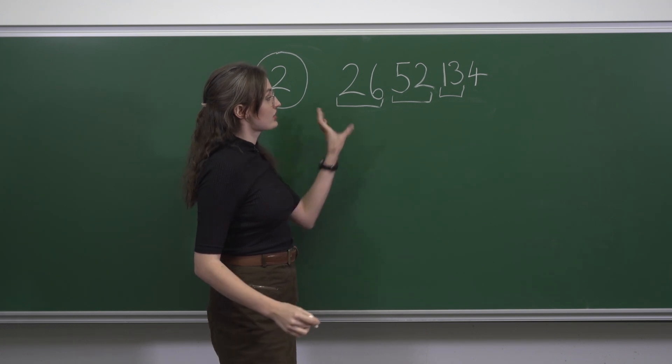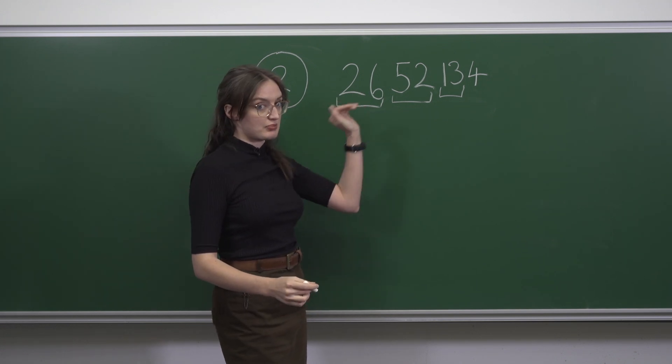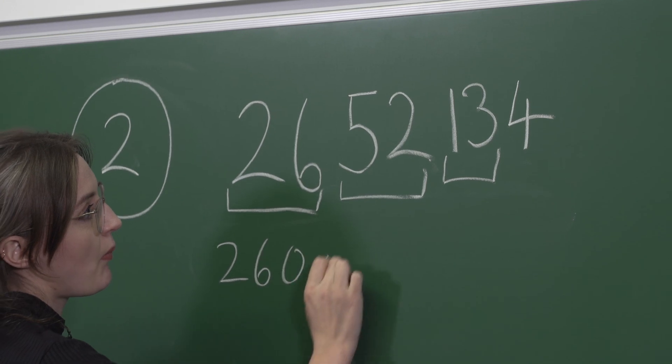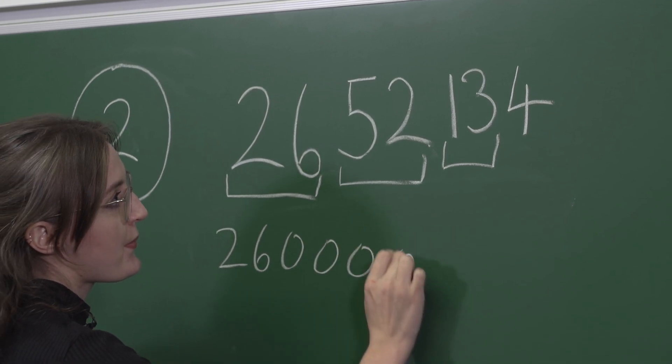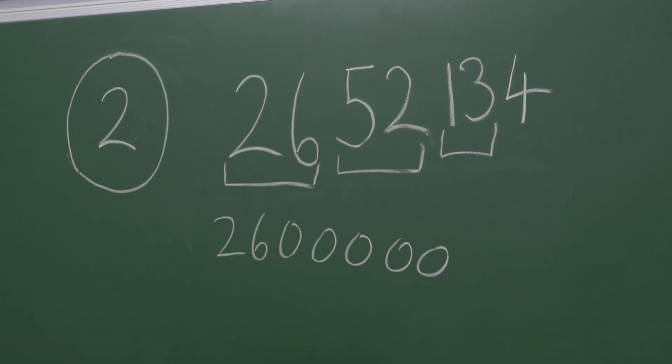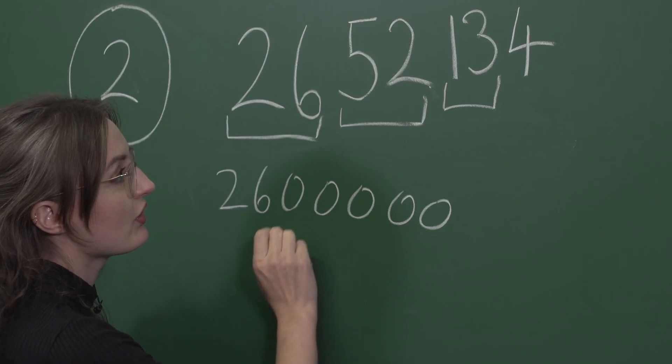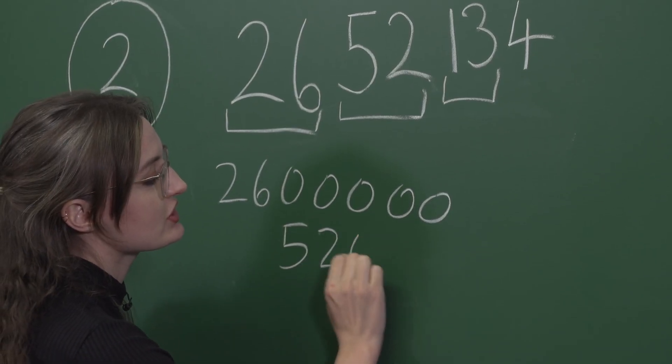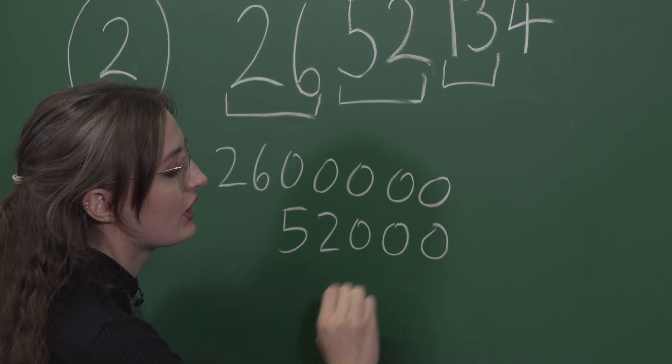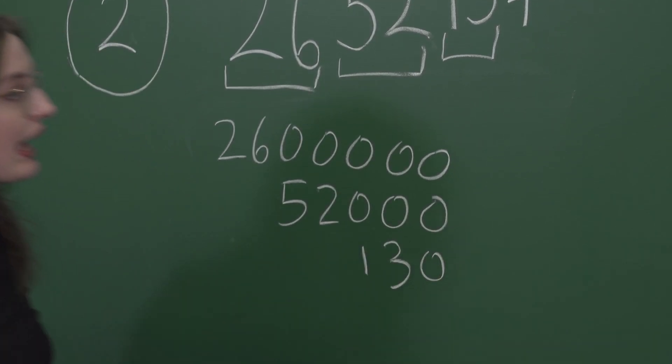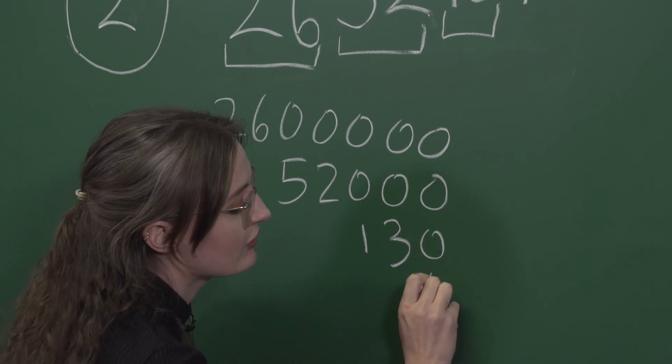So if we write out what these digits are actually representing, we have 2,600,000, 52,130, and the final digit is 4.